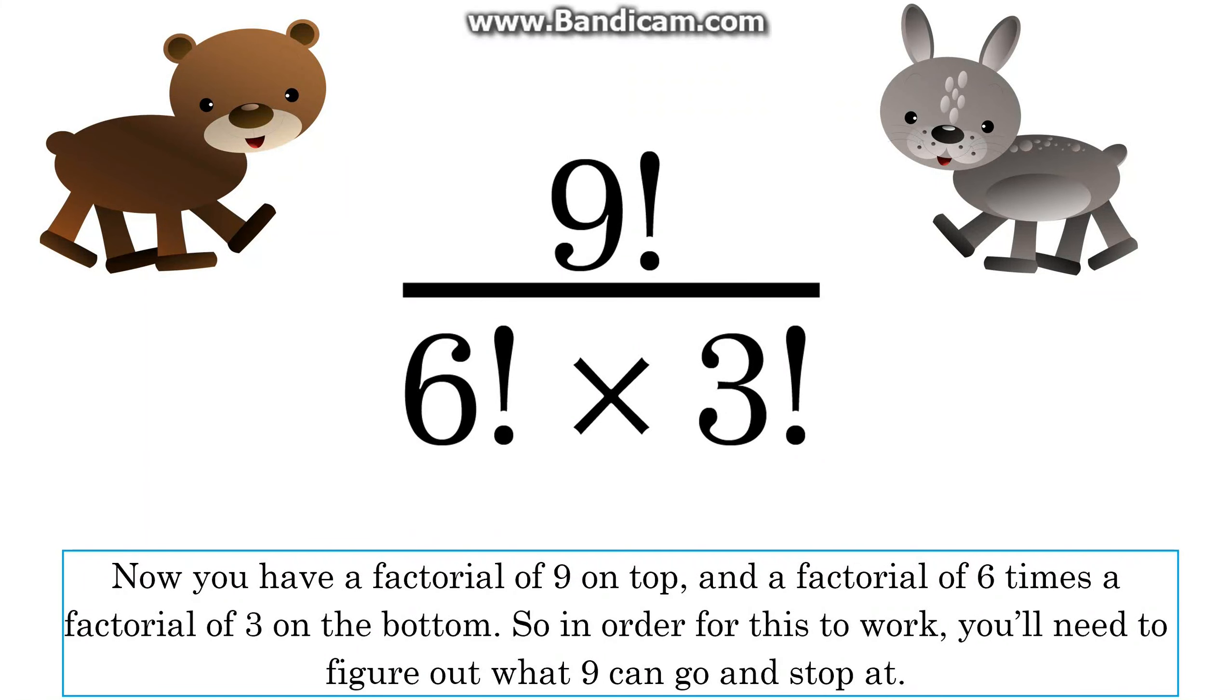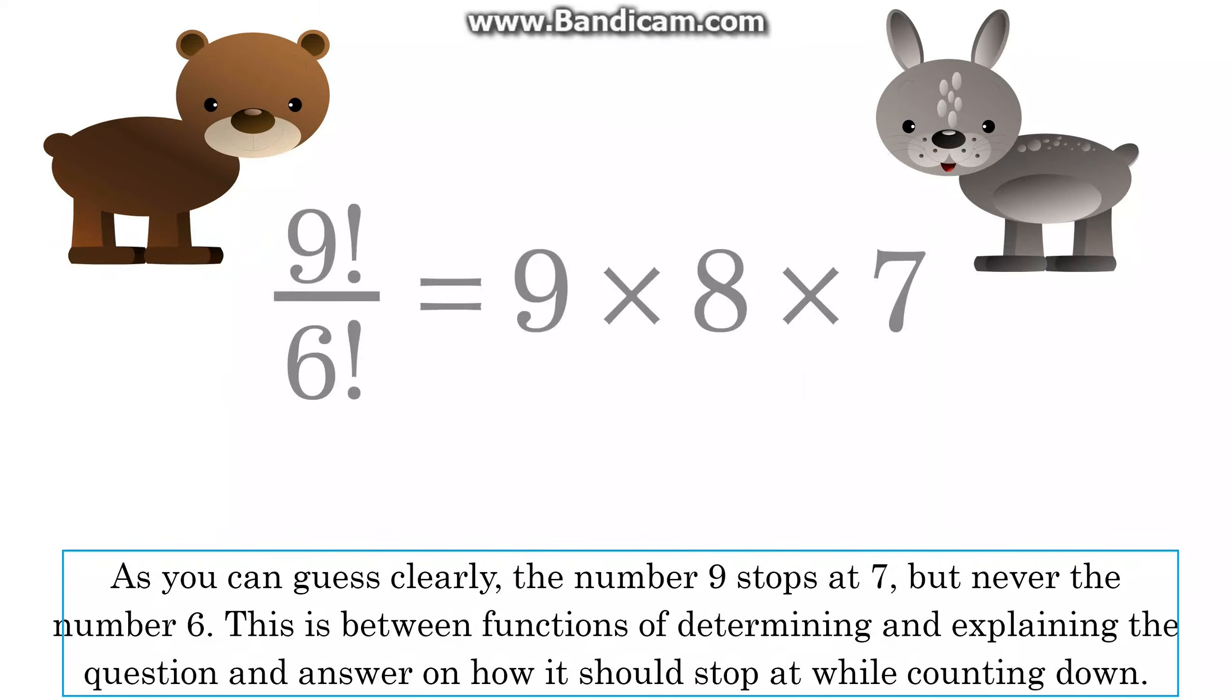Now you have a factorial of 9 on top and a factorial of 6 times a factorial of 3 on the bottom. So in order for this to work, you'll need to figure out what 9 can go and stop at. As you can guess clearly, the number 9 stops at 7 but never the number 6.